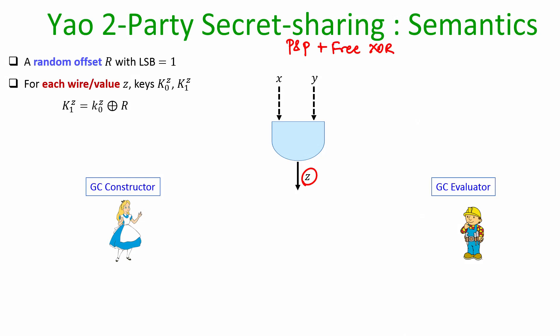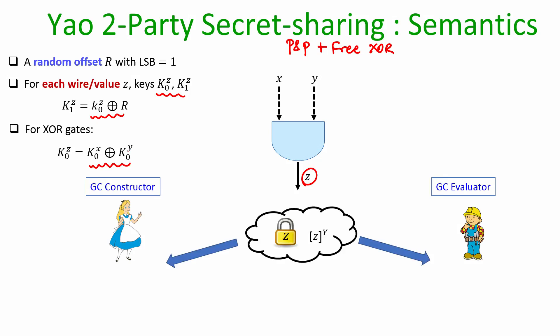then corresponding to this value Z there will be two keys, where the key corresponding to the value 1 will be related to the 0-key as per the global offset. We have an additional constraint: if this value Z is the outcome of an XOR gate, then its 0-key is not randomly chosen but is set to be the XOR of the 0-key for X and the 0-key for Y.